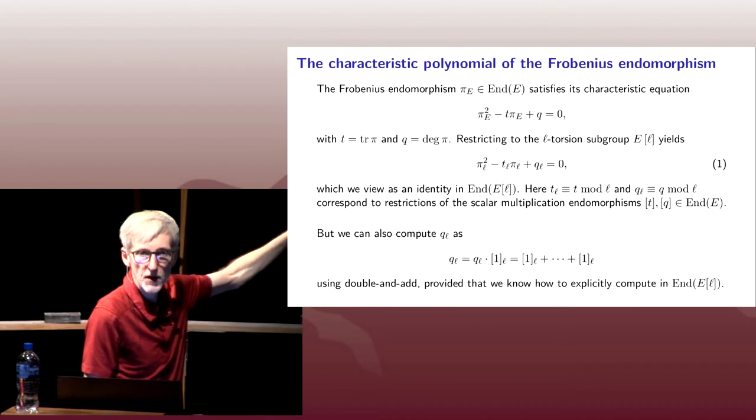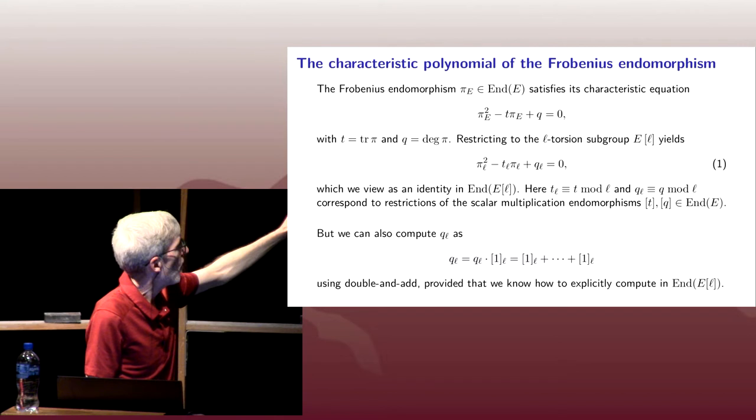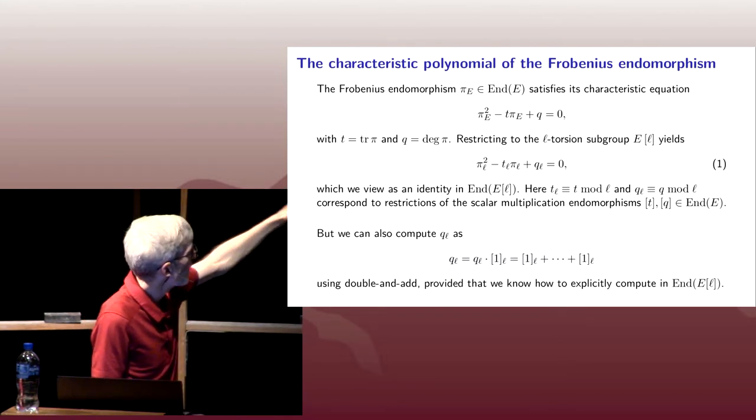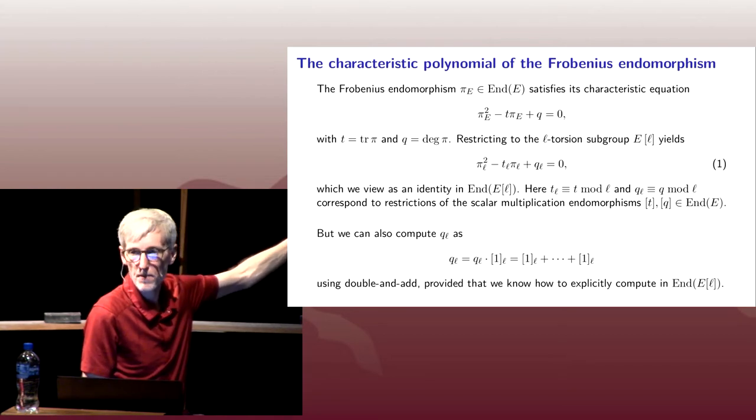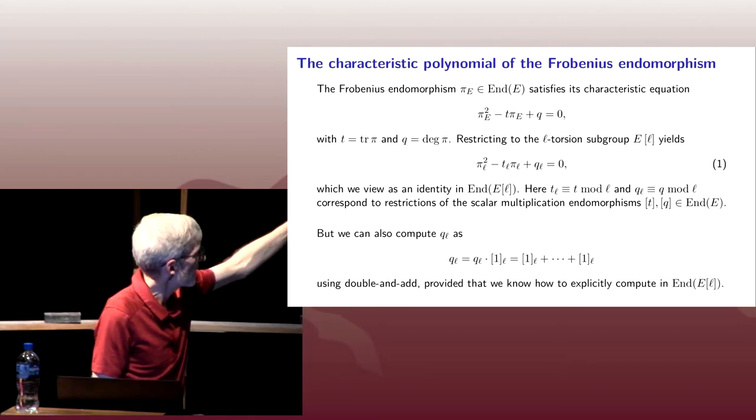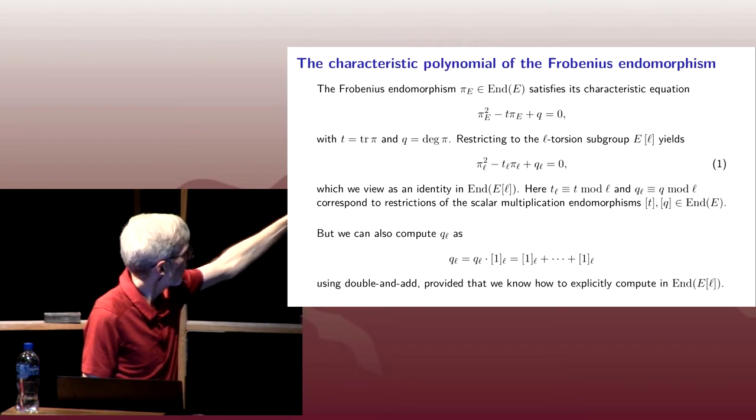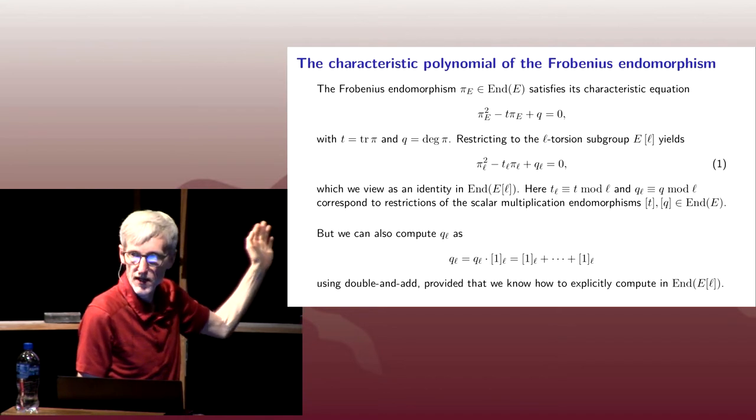We know how to compute one as an endomorphism, and we know how to add one to itself q times. Now q is huge, but we can use our standard double binary addition trick here, our binary multiplication to do a double and add algorithm to add the one endomorphism to itself q times to get q_l. And that's exactly what we're going to do.